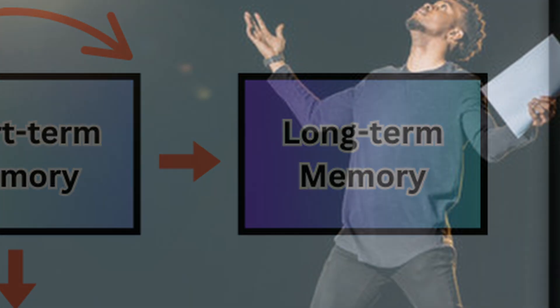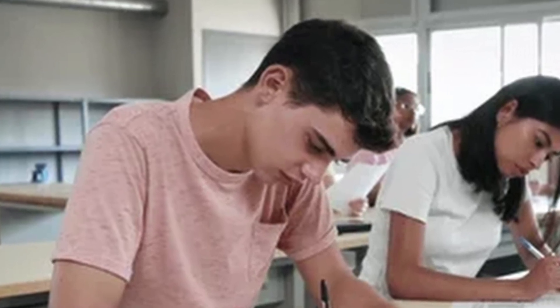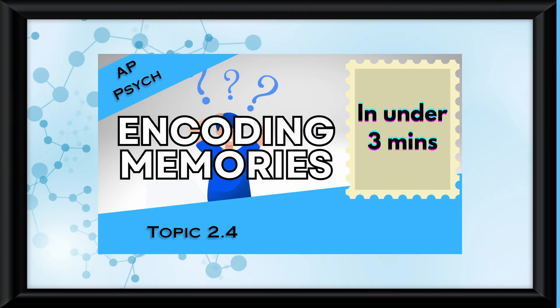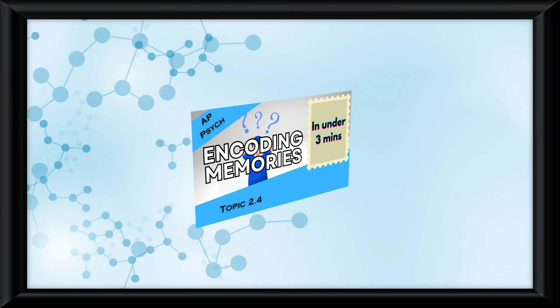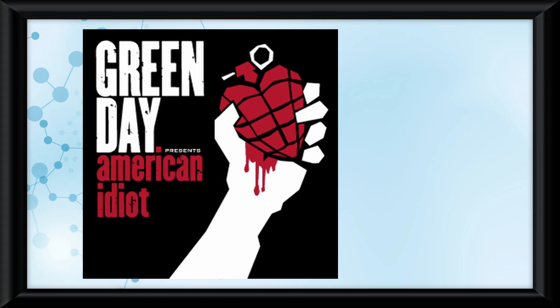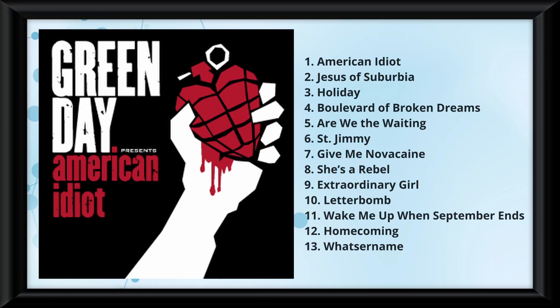If you're an actor trying to remember lines, if you're a student trying to remember information for a test, or if you're just someone trying to remember an important date, then you've come to the right place. For this video, I will be using one of my favorite albums, American Idiot by Green Day, as an example of memorizing all of the songs in the album.